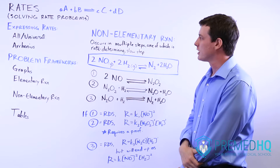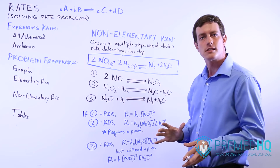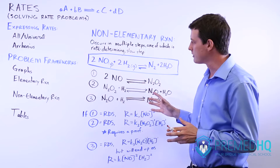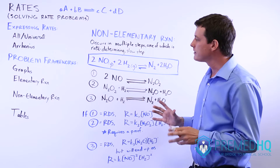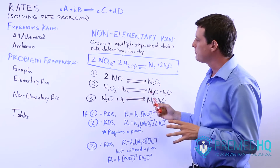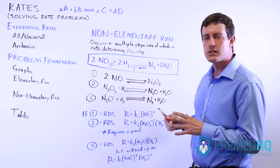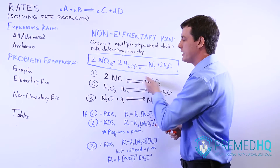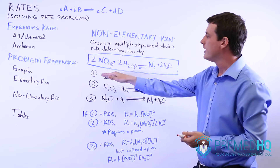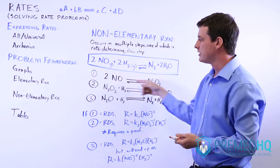For a non-elementary reaction, there will always be one step that is the slowest step, and because it's the slowest step, it's called the rate-determining step. It's the one that determines the rate, and because of this, you can express the rate of a non-elementary reaction simply by representing the rate of the rate-determining step. So if the first one is the rate-determining step in this case, you would simply express the rate as though it were an elementary reaction of step one.